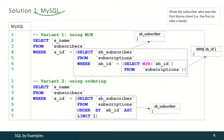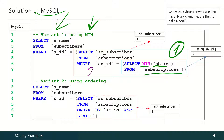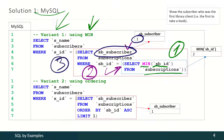Let's start with MySQL and the first variant using the MIN function. Here we have several steps. On the first one we have to detect the minimal value of the identifier of subscriptions. Using that data, on the second step we have to detect the identifier of a subscriber that corresponds to that minimal subscription. And once we have this identifier, on the third step we have to transform this information into the subscriber name.